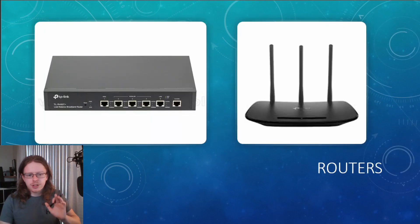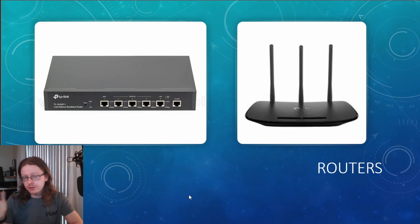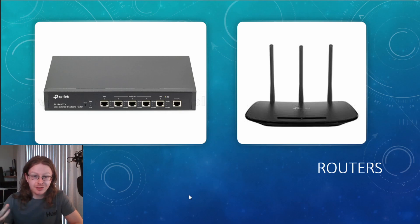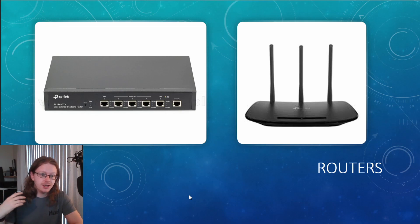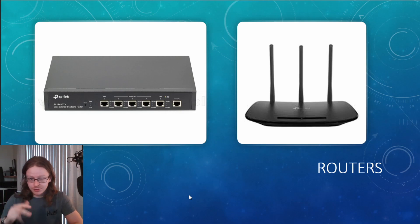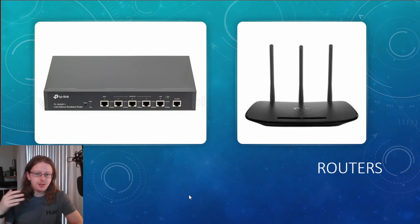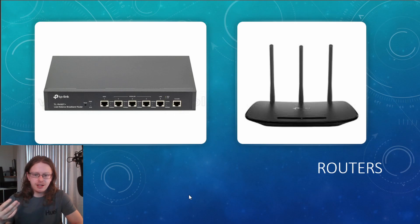The first thing we're going to talk about is routers. Depending on whether you're home or in a business, the router can look quite different, and it also depends on your internet service provider. Here in the UK we've got quite a few — BT, TalkTalk, Sky, Virgin Media, and potentially others. Each of them, whenever you buy or lease an internet line, will send you their own router device.